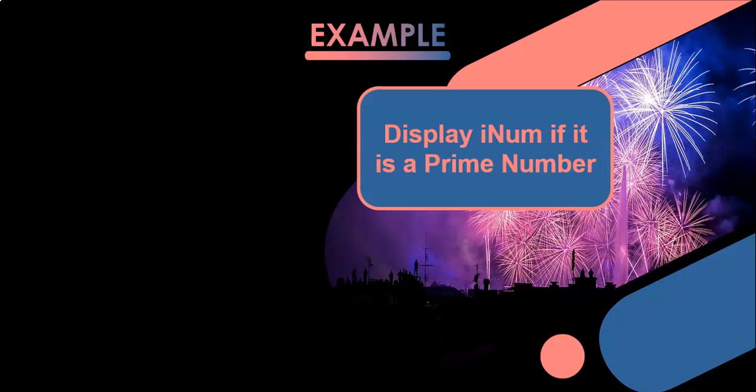For example, with five: one, two, three, four, and five. One can go into five without a remainder, and five can go into five without a remainder. But two and three — there's always going to be a remainder. So therefore, it's a prime number.